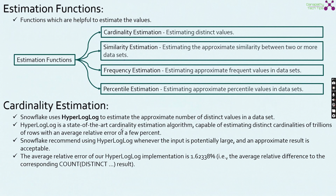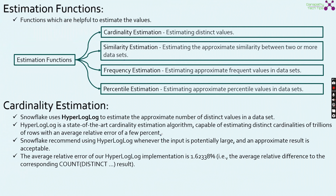HyperLogLog is the state-of-the-art cardinality estimation algorithm capable of estimating distinct cardinalities for trillions of rows with an average relative error of a few percent. Say if I want to find the distinct values of a column on a table having trillions of rows, the ideal option would be SELECT COUNT(DISTINCT column_name) FROM table_name. But if you do so, it is a really tiresome and time-consuming process. Utilizing these functions will do the work in a very, very smaller fraction of time.